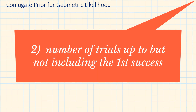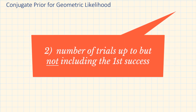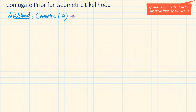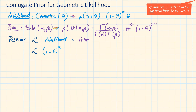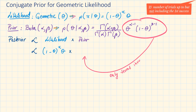Now for Scenario 2, when the number of trials are up to but not including the first success. We represent this as P(x|θ) = (1−θ)^x · θ. Using the same beta prior, the posterior is proportional to the likelihood times the prior: (1−θ)^x · θ · θ^(α−1) · (1−θ)^(β−1).